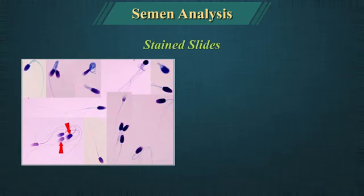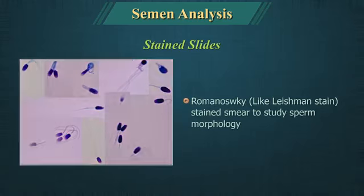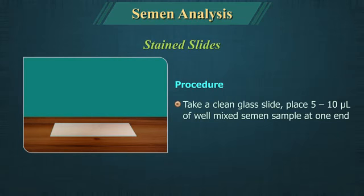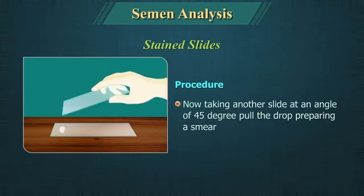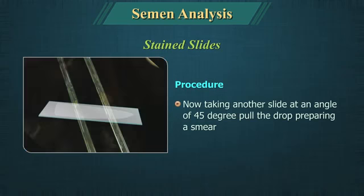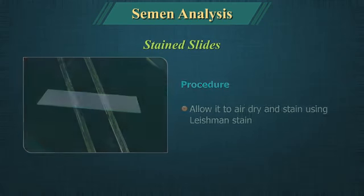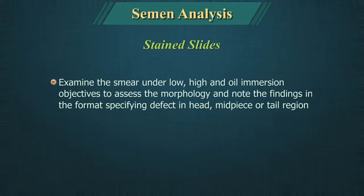Stained slides for morphology: Leishman-stained smears are used to study sperm morphology. Take a clean glass slide, place 5 to 10 microlitres of well-mixed semen sample, then taking another slide at an angle of 45 degrees, pull the drop of semen to prepare a smear. Allow it to air dry and stain using Leishman stain. Examine under low power, high power and oil immersion objectives to assess morphology, noting defects in the head, midpiece or tail region.